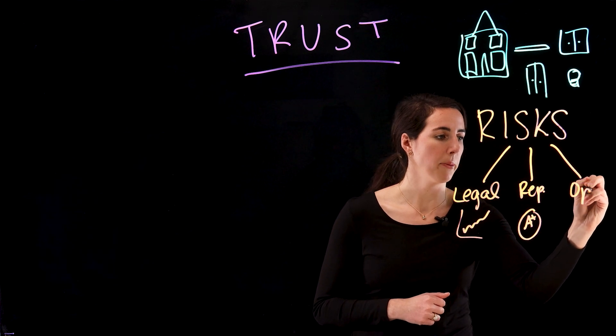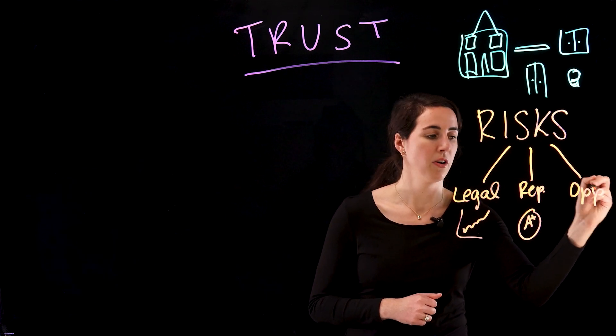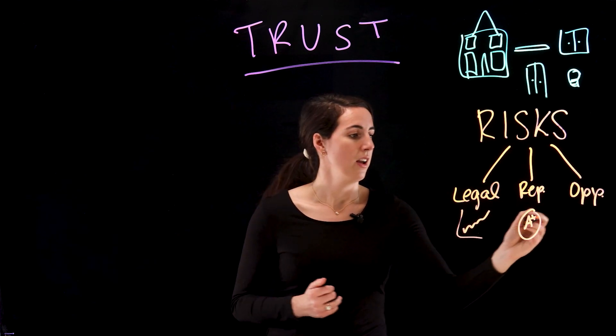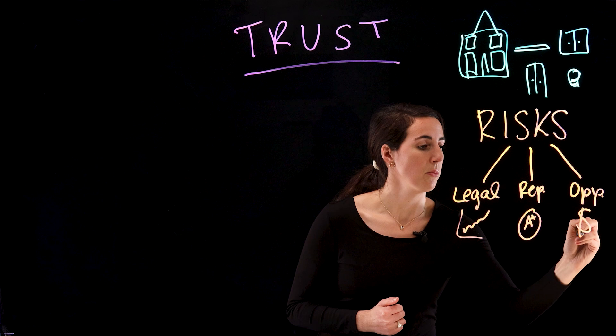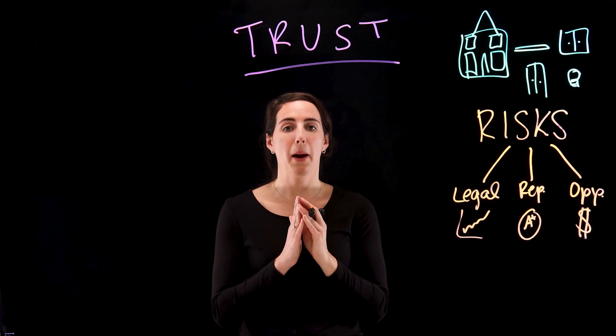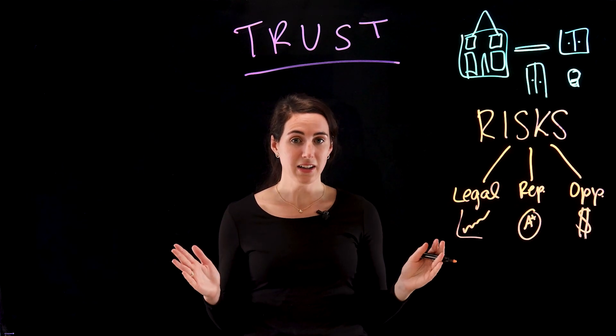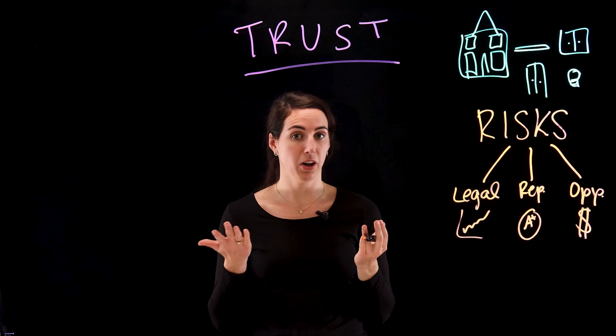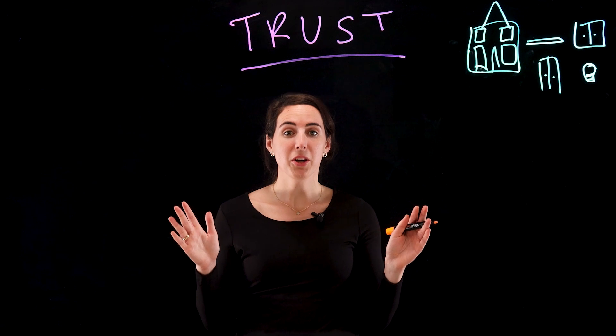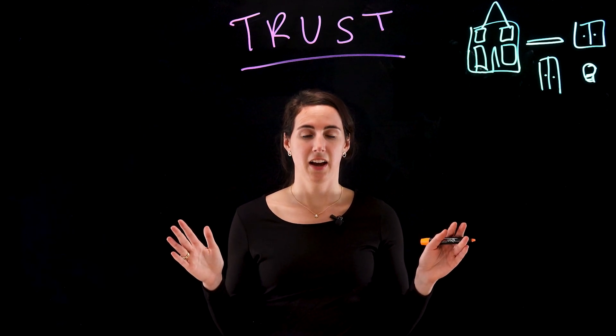Finally, we have operational risks. These risks can result in immense fines or loss of productivity for a company. This could be everything from regurgitating PII information unintentionally, or exposing trade secrets. Now that we understand the risks at stake, let's talk about how to build trust in our AI models.